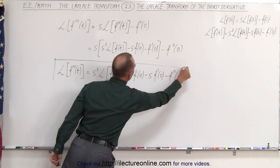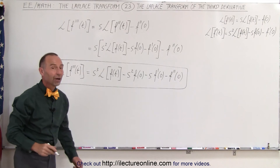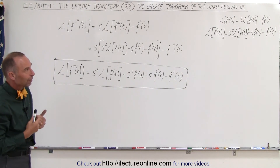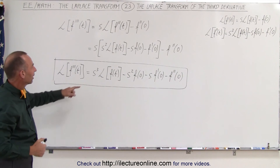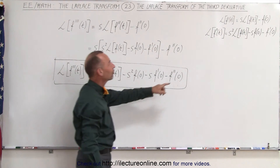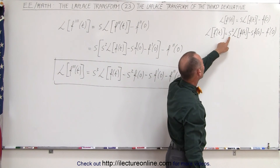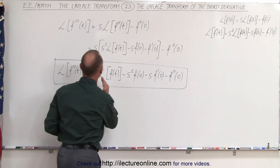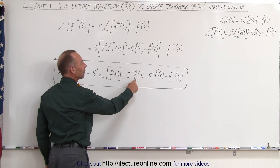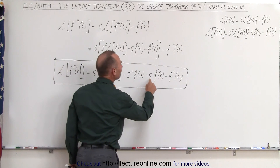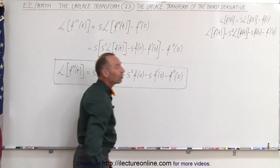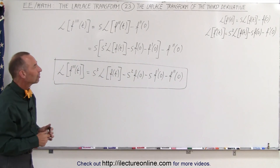That's how we find the Laplace transform of any derivative — we just keep going with the very same technique. You begin to see the pattern: for every additional derivative we have an additional power of s. We have s for the first derivative, s squared for the second, s cubed for the third, each multiplied by the Laplace transform of the original function, then minus s squared times f(0), minus s times f prime of zero, minus f double prime of zero, and so forth.